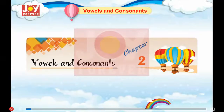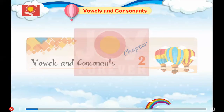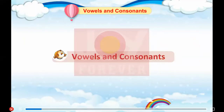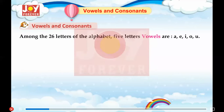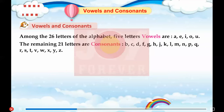Chapter 2: Vowels and Consonants. Among the 26 letters of the alphabet, 5 letters are vowels: A, E, I, O, U.